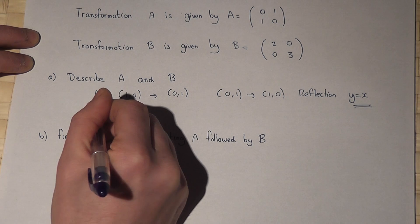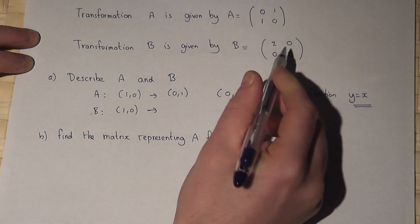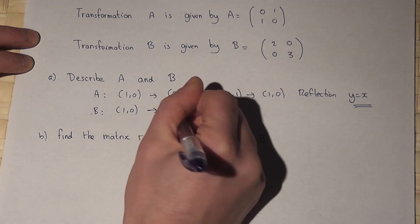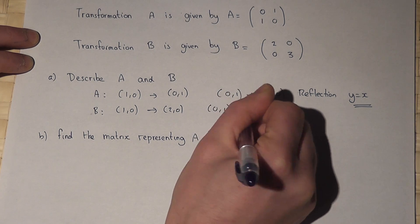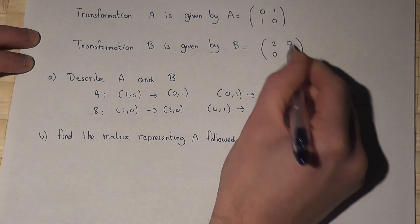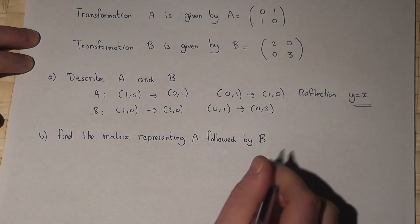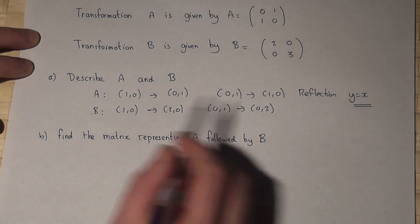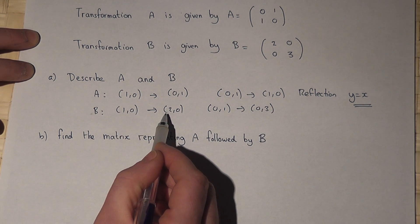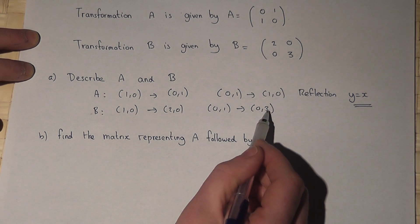For matrix B, the coordinate (1,0) has been mapped to (2,0), whereas the coordinate (0,1) has been mapped to (0,3). In this case there's been an enlargement that has taken place. The x coordinate has been enlarged by a factor of 2 and the y coordinate by an enlargement by a factor of 3.